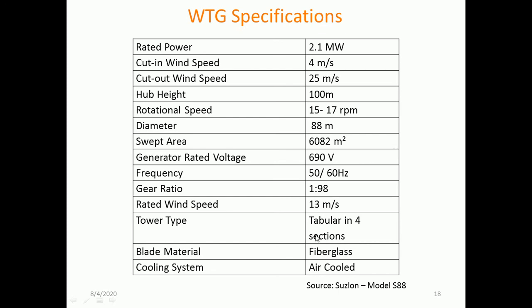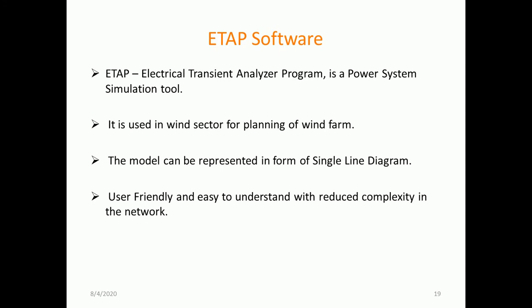The tower considered in this case is tubular and divided into 4 sections. The software used for analysis is the Electrical Transient Analyzer Program (ETAP), which is one of the powerful simulation tools available to analyze the power quality of electric systems. It is used in the wind sector for planning of wind farms. The model can be represented in the form of a single line diagram and it is user-friendly and easy to understand with reduced complexity in the network.